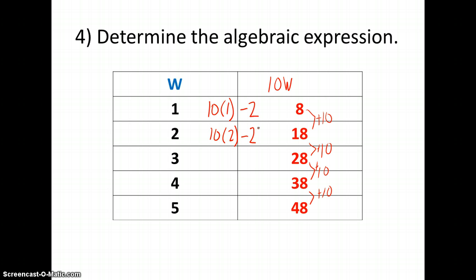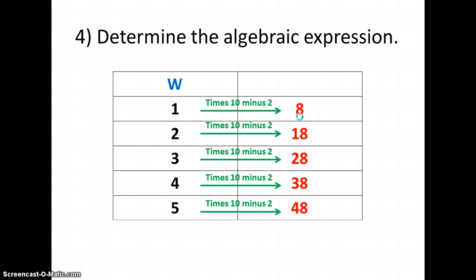Because once I plug in my variable with a value, I need to look at the right column and say, is that what I get? Is 10 times 2 is 20? Is 20 what I need? No, I need 18. What do I need to do to 20 to get to 18? I need to subtract 2. And in each of these instances, I would need to multiply my w by 10, and then subtract 2. So my variable expression would be 10 times w, minus 2.